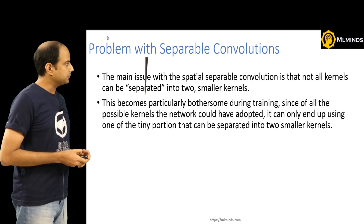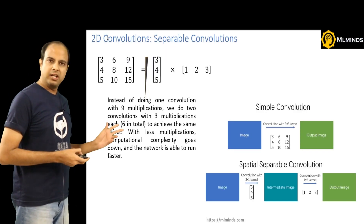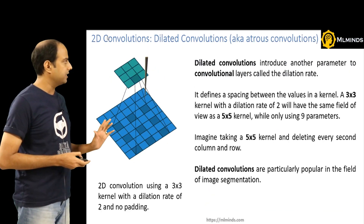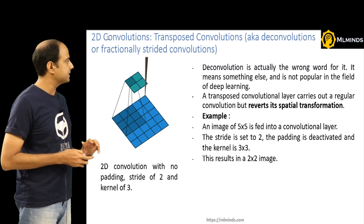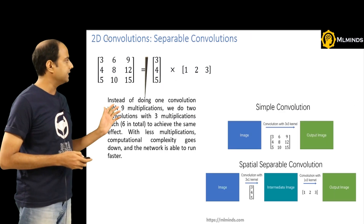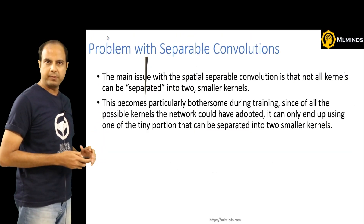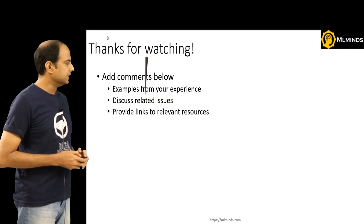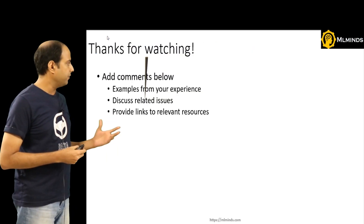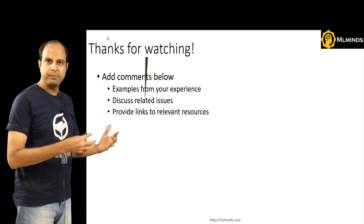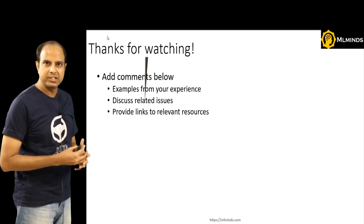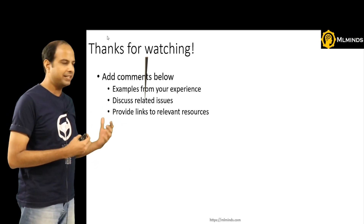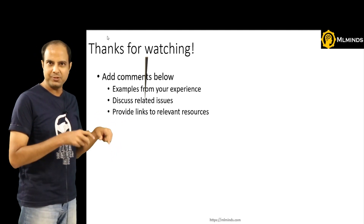That is all for this video. To recap, we talked about three different kinds of convolutions: dilated convolutions, transposed convolutions, and spatially separable convolutions. Thank you for watching — feel free to add examples from your experience or links to relevant resources in the comments below.